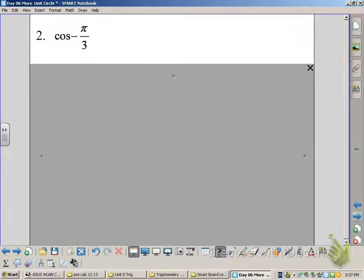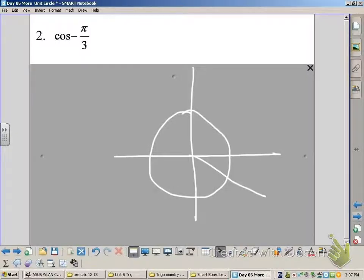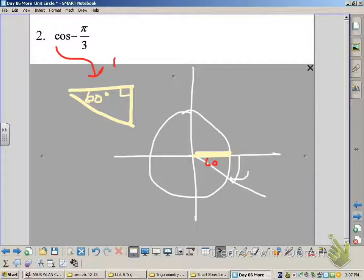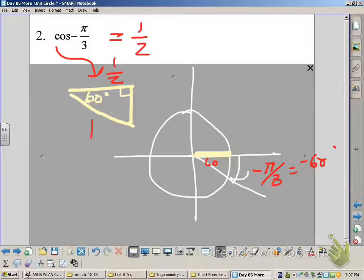Let's take a look at this one, the cosine of negative π over 3. As we graph that we're going in the negative direction, so that would be 60 degrees or negative 60 degrees. And we're looking at cosine. Cosine is the adjacent. So if we look at our 30, 60, 90 triangle, we know that our hypotenuse is 1. And our adjacent side would be 1 half. So the cosine of negative π over 3 is 1 half, our adjacent side of our triangle. And since the x values are positive, it's positive 1 half.